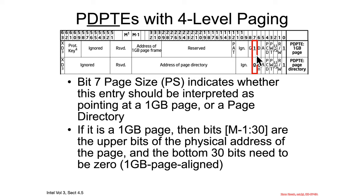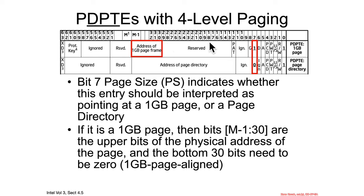The page size bit indicates whether this entire entry is pointing at a one gigabyte page frame, or whether it is pointing to the next level of table translation, the page directory. If PS is one, then the bottom 30 bits — bits zero through 29 — are all assumed to be zero, and bits 30 up to M minus one are the address of the one gigabyte page frame.